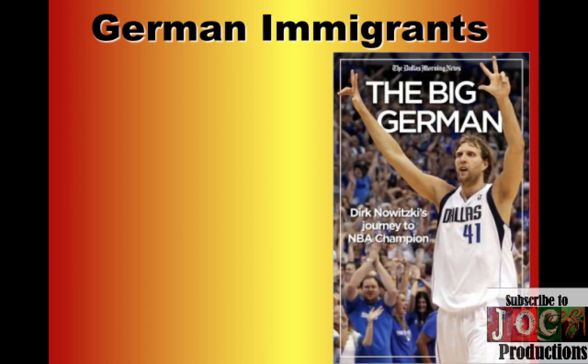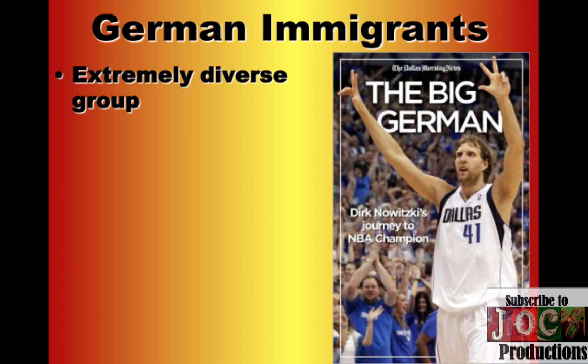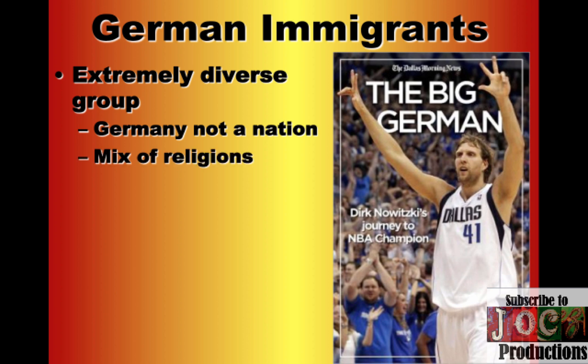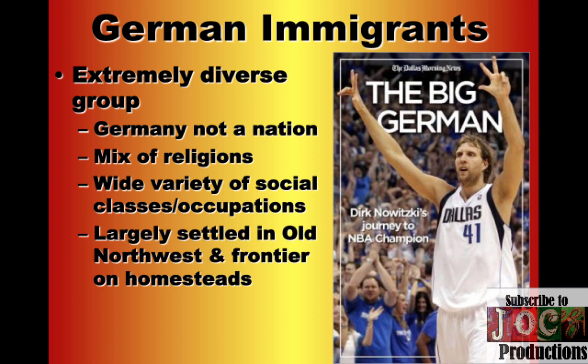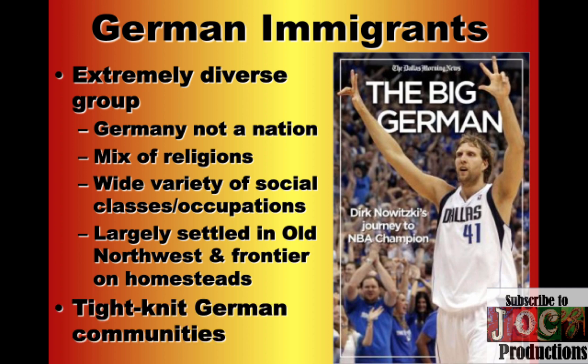The second biggest group of immigrants coming into the United States during this time period are the Germans. They're a very diverse group of people — Germany is not a unified nation yet. There's a mix of religions: Protestants, Catholics, Jews, coming from a variety of social classes and occupations. Unlike the Irish, the Germans are going to largely settle in the old Northwest and on the frontier on homesteads, developing very tight-knit German communities.